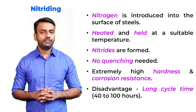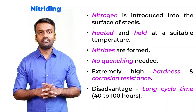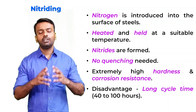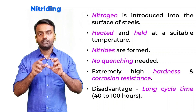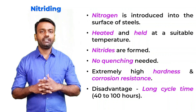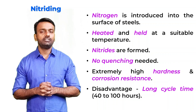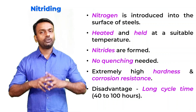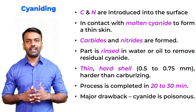The next surface treatment method is nitriding. As the name suggests, nitrogen gas is introduced into the surface of the steel while heating and holding the sample at a certain elevated temperature. Nitrides form in the surface of the material. No quenching is required, and nitriding provides extremely high hardness and corrosion resistance. The only disadvantage is that the cycle time is very high — it takes about 40 to 100 hours to complete the entire nitriding cycle.